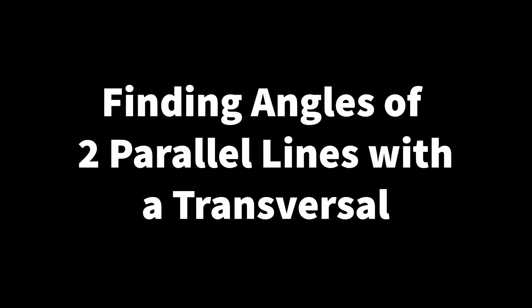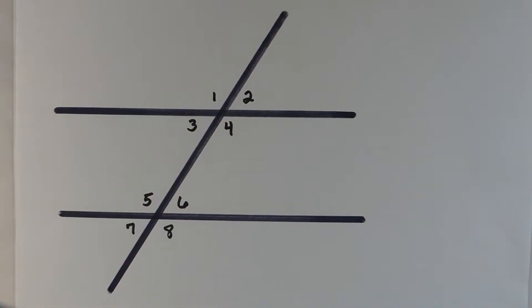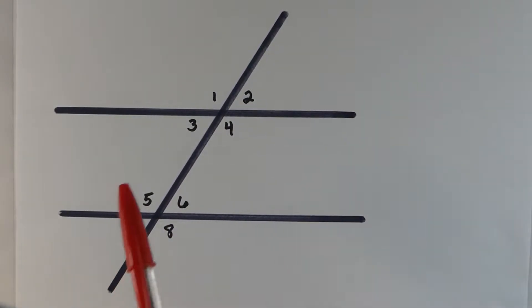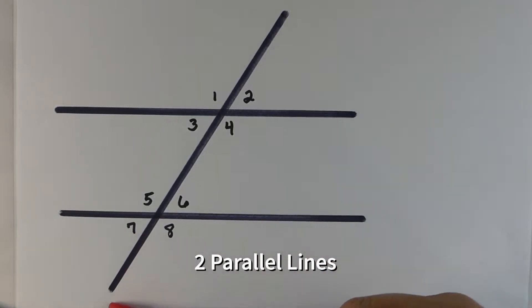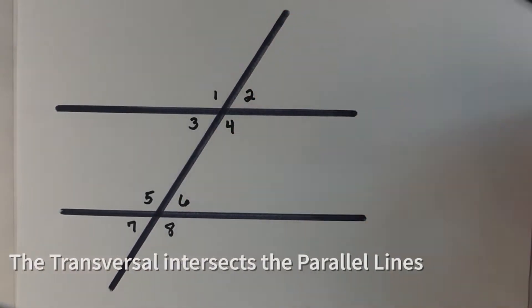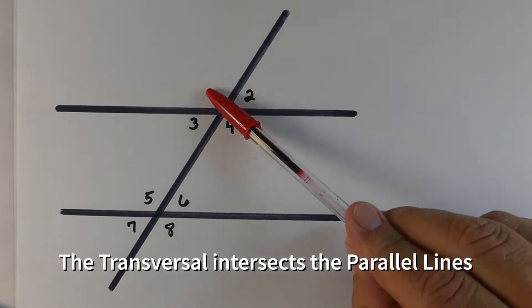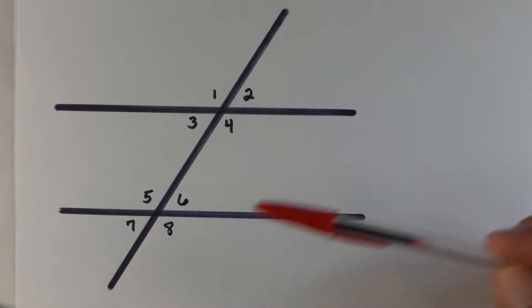One of the first things we want to look at are some basics when we're using two parallel lines with a transversal. So here are the basics. Number one, we have two parallel lines. The line that intersects both of those is referred to as the transversal, and this is going to create eight different angles.